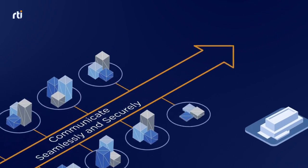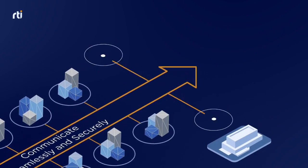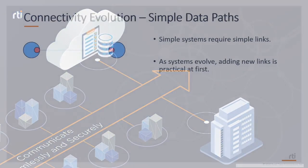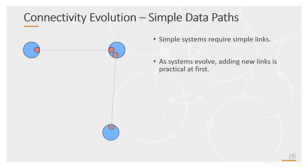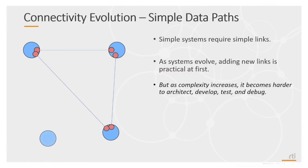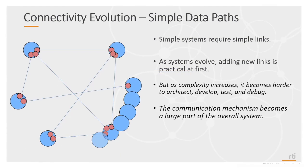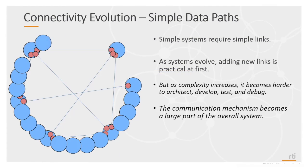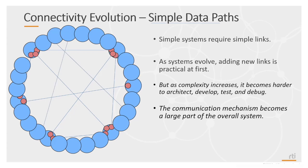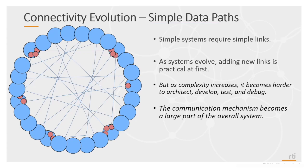As computers were first networked, the communication needs were simple. Simple needs require simple connections. Adding new systems is easy at first, but as the number of connected systems increases, the complexity increases, eventually dominating the system.